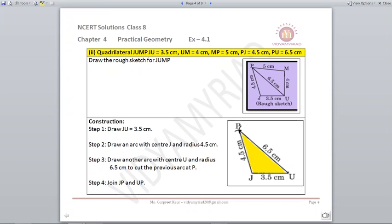Same way let us do the next one. Here we have to make a quadrilateral JUMP where you are again given all the sides and diagonal given PU as 6.5 cm. So we have already drawn a rough sketch so that we can easily frame and mark our measurements on the compass and scale. And it will be very easy for us to do.